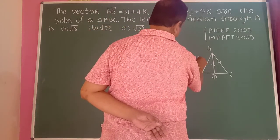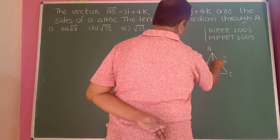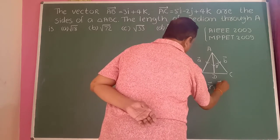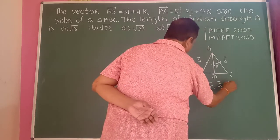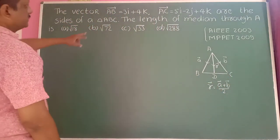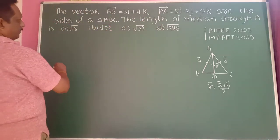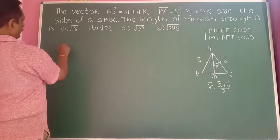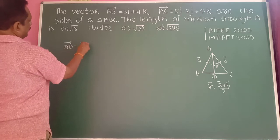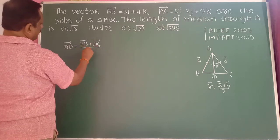Here vector a-bar and vector b-bar represent the sides. The median is the vector AD. Using the midpoint formula, AD equals AB plus AC divided by 2.